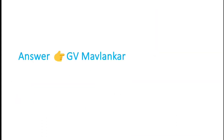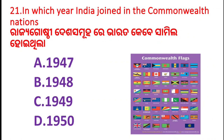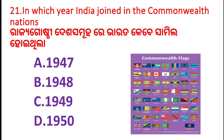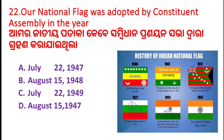Question number 21: In which year did India join the Commonwealth of Nations? Question number 22: Our national flag was adopted by the Constituent Assembly in which year? Option A: July 22, 1947. Option B: August 15, 1948. Option C: July 22, 1949. Option D: August 15, 1947. The correct answer is July 22, 1947.